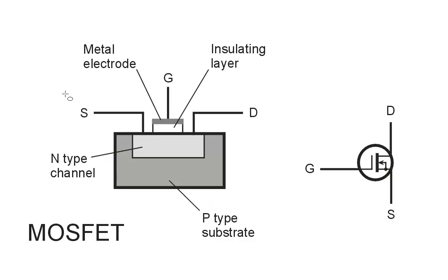But notice, here's the source, here's the gate, and here's the drain. Just like in an ordinary junction field effect transistor, the source, gate, and drain. The gate is the control electrode here, in most circuits.